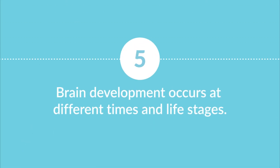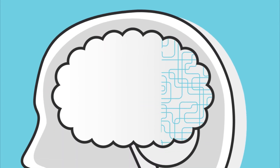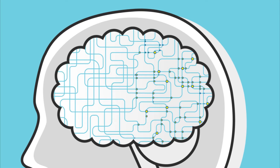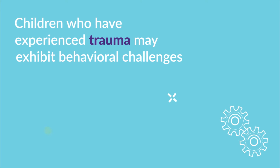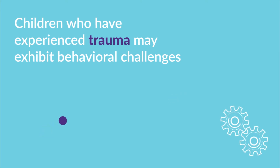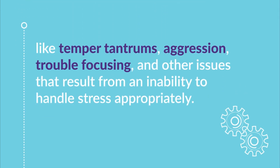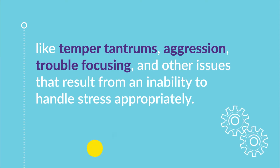Fifth, brain development occurs at different times and life stages. Because brain development starts from the back of the brain and progresses toward the front, the on switch for the stress response — the amygdala — matures before the off switch, the prefrontal cortex. Young children who experience adversities and toxic stress may develop difficulties controlling the off switch when their stress response is activated. For example, children who have experienced trauma can exhibit behavioral challenges like temper tantrums, aggression, trouble focusing, and other issues that result from an inability to handle stress appropriately.